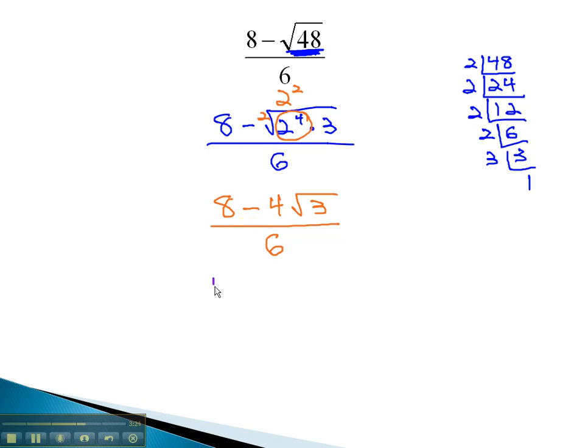So we must factor it, factoring out the common factor of 4, leaving behind 2 minus the square root of 3 over 6.